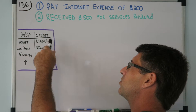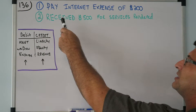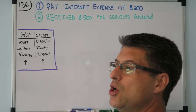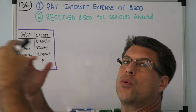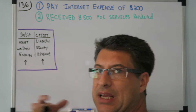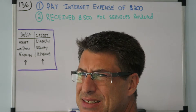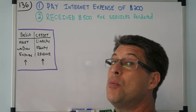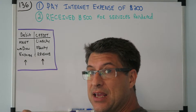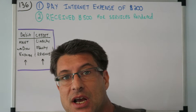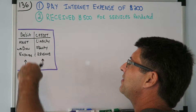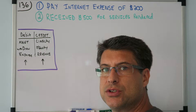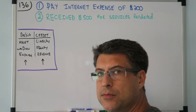In the second entry, receive $500 for services rendered — we're getting cash. Cash is an asset, and since we're getting it, it's increasing, which means we debit it. So let me do these two journal entries right now.